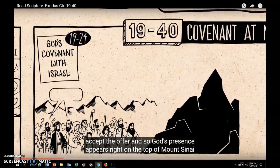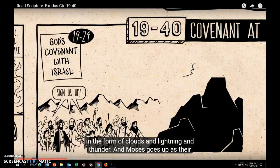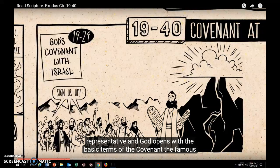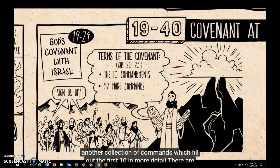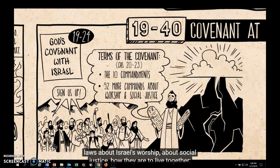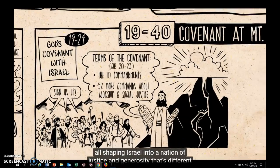The people of Israel eagerly accept the offer. God's presence appears on top of Mount Sinai in the form of cloud and lightning, and Moses goes up as their representative. God opens with the basic terms of the covenant, the famous Ten Commandments — the basic terms of how the Israelites and God are going to relate to each other. After this come another collection of commands that fill out the first ten in more detail: laws about Israel's worship, social justice, and how they are to live together, shaping Israel into a nation different from the other nations.